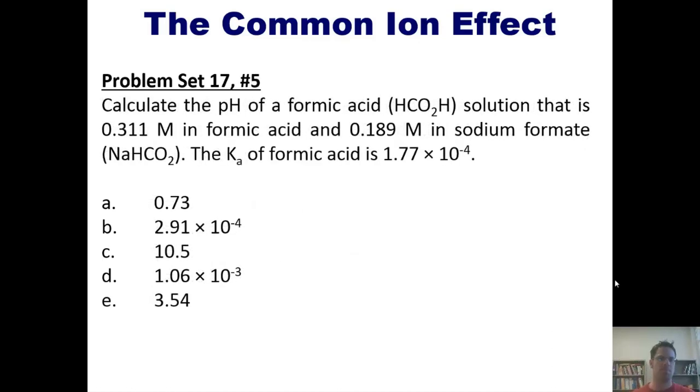Here's another problem. Calculate the pH of formic acid solution that is 0.311 molar in formic acid and 0.189 molar in sodium formate. The Ka of formic acid is 1.77 times 10 to the negative 4th. You're welcome to attempt it on your own, and then if you wish, you can click this link to a separate video in which I'll show you how to do it on the board.